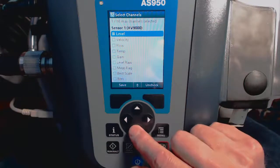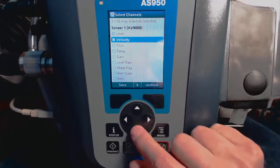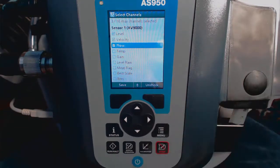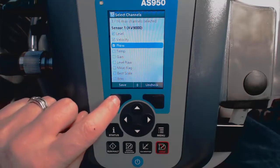Then we'll select what channels we want to measure. In this case, we'll select Level, Velocity, and Flow. When we're done, click Save.